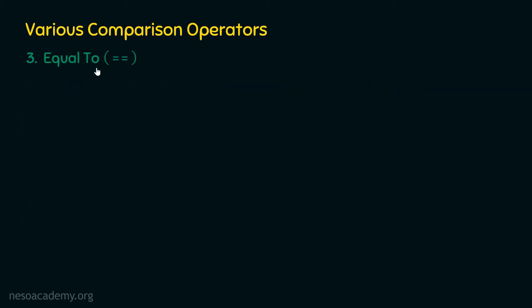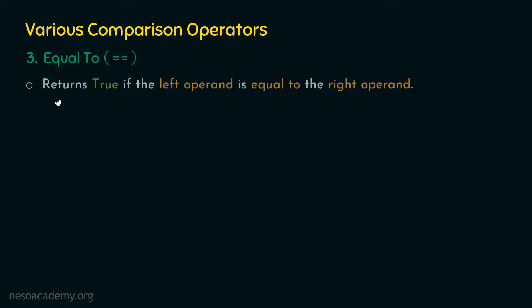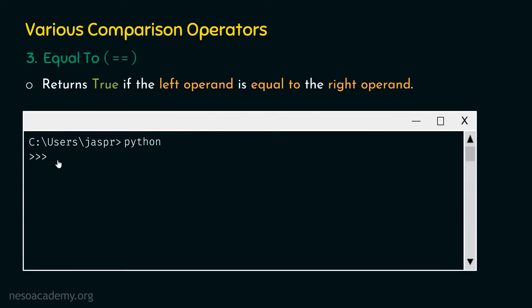Let's move on to the equal to operator, which is always denoted by a double equal sign (==). This operator returns true if the left operand is equal to the right operand. Note that a single equal sign denotes the assignment operator, while the double equal sign represents the equal to comparison operator. For example, 10 == 20 gives false. If we type 3.14159 == 3.14159, we get true, because these two operands are exactly the same.